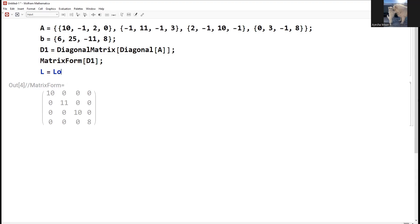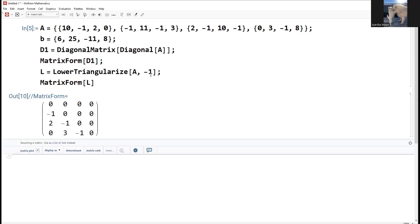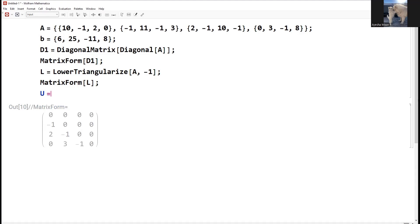Now we will take the lower triangularization matrix. We will take matrix A minus 1. This is the matrix form of L, which has minus 1 and the rest of the entries are 0. Next, let's do the upper triangular matrix U from A.